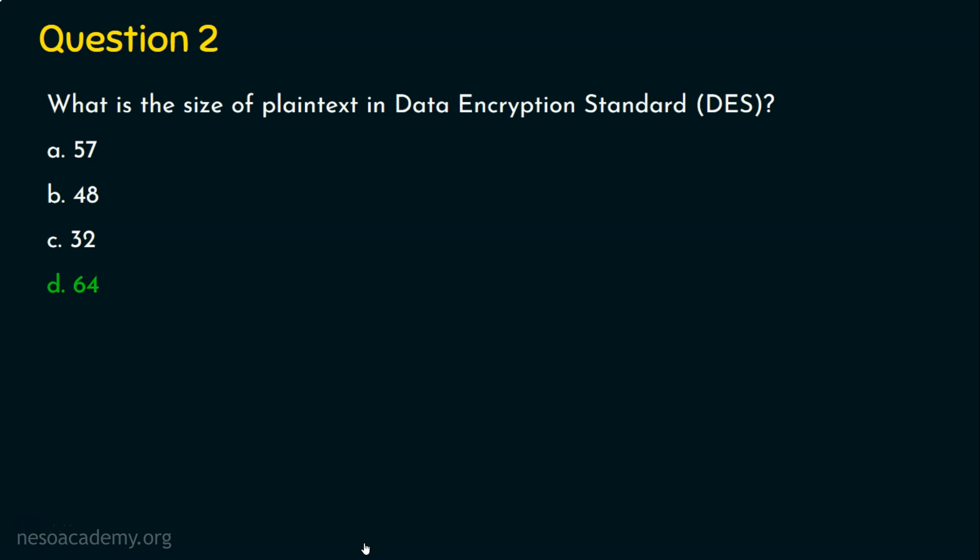Let's move on to question number three. The Feistel cipher of DES encryption algorithm uses dash S boxes. Options are given. Option A, 8. Option B, 7. Option C, 6. And option D, 5. This is also an important information to be known as far as DES algorithm is concerned.